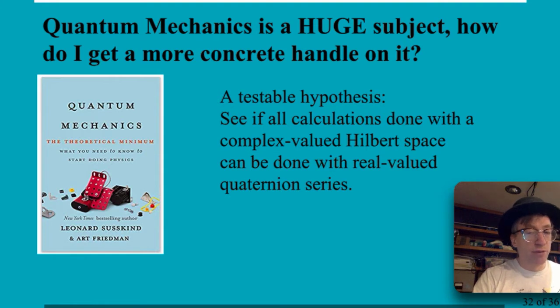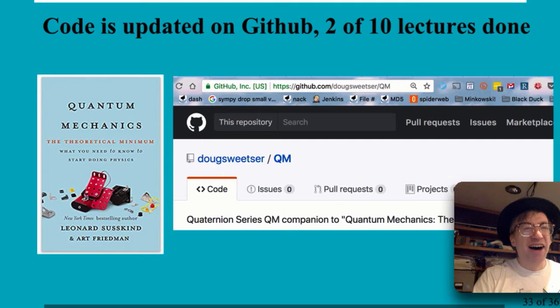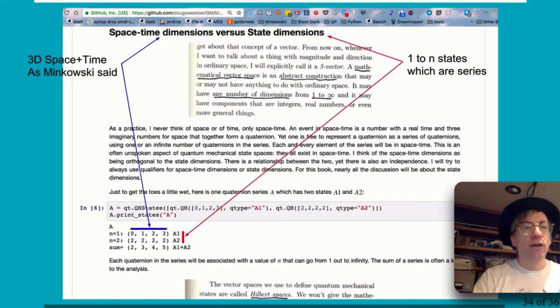And people just say, no, quaternions got four, you're done. Okay. Well, you can follow my progress, slow as it may be, on GitHub. I've done two of the lectures so far, and this is a companion book. So let me answer that first question here.